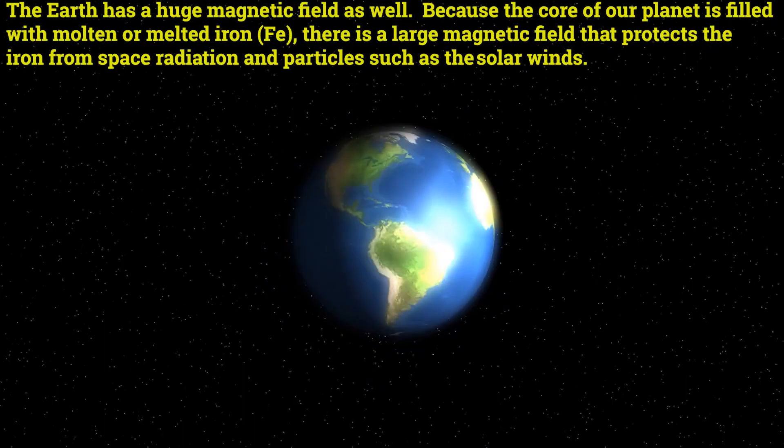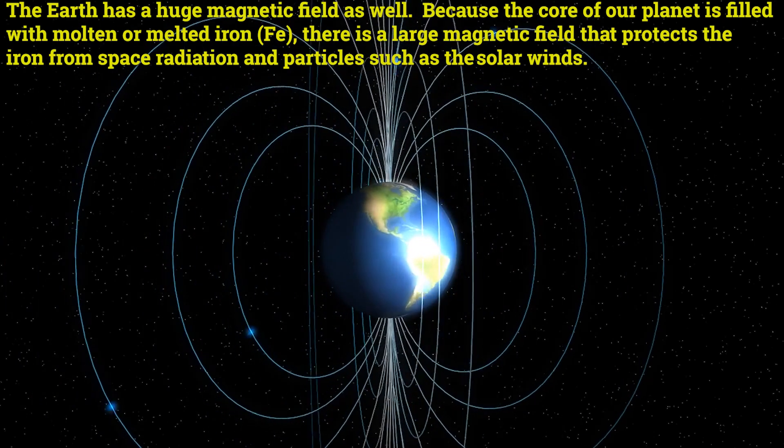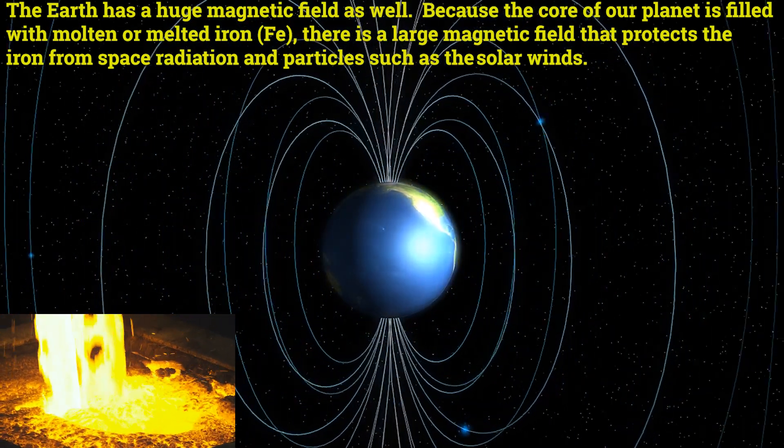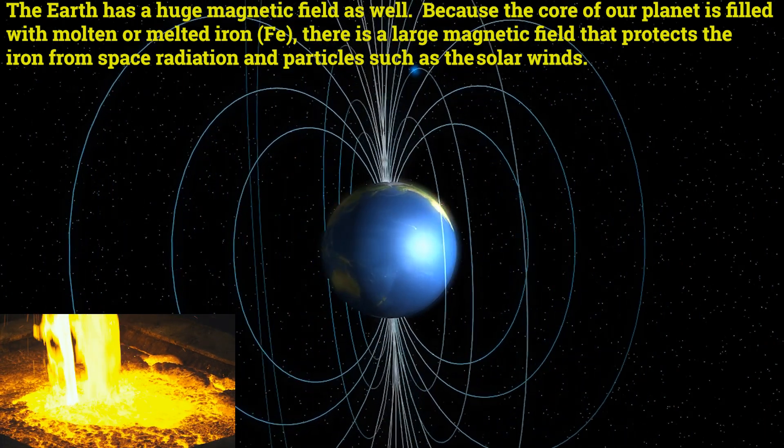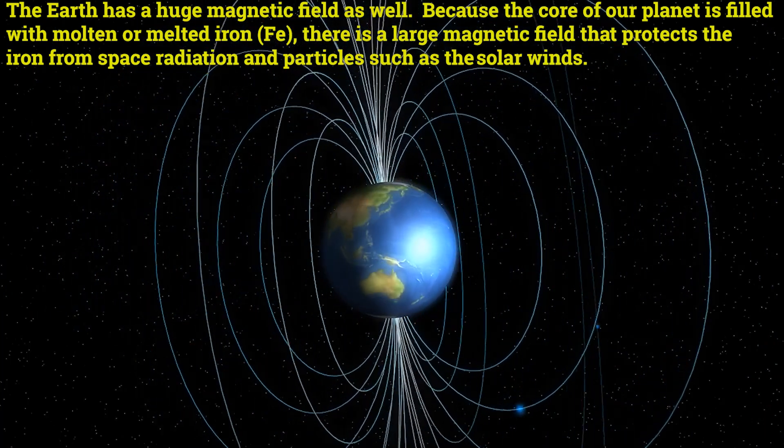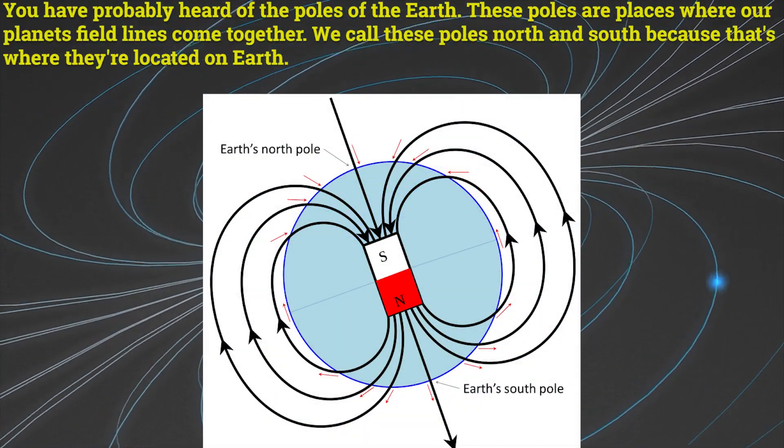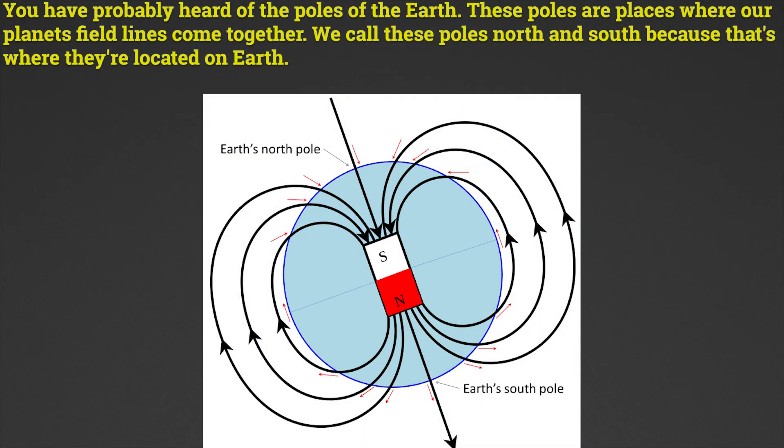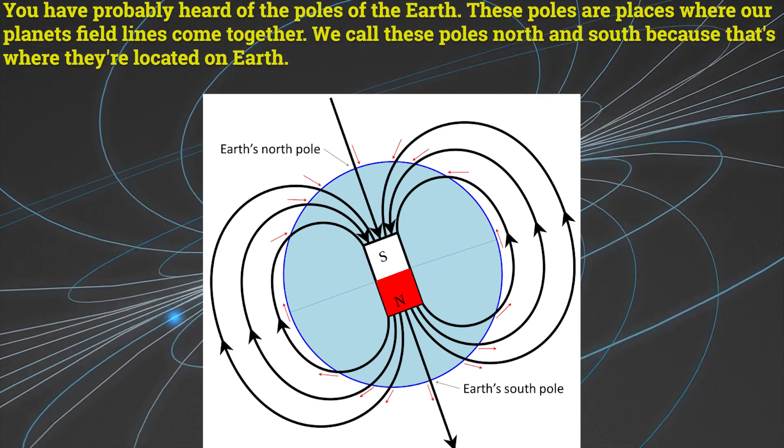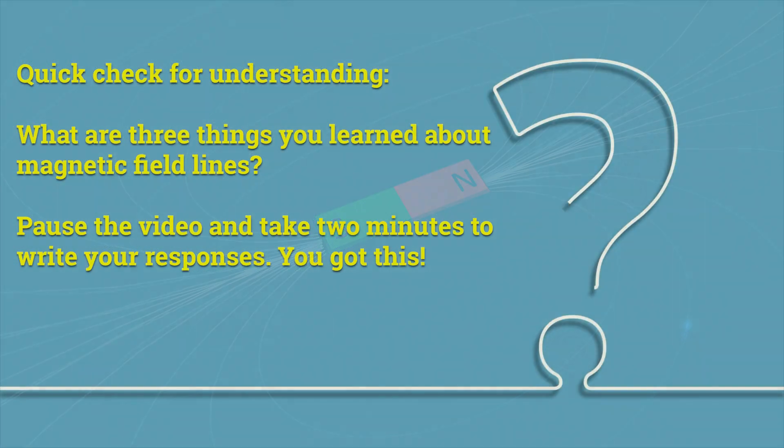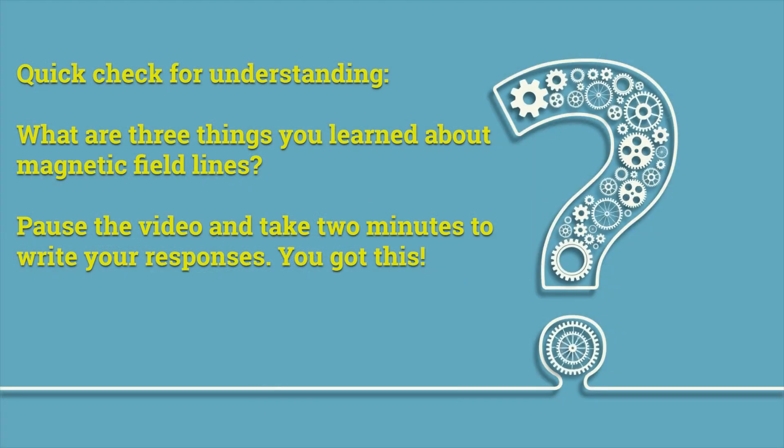The earth has a huge magnetic field as well. Because the core of our planet is filled with molten or melted iron, there is a large magnetic field that protects the earth from space radiation and particles such as the solar winds. You have probably heard of the poles of the earth. These poles are places where our planet's field lines come together. We call these poles north and south because that's where they're located on earth. Quick check for understanding: What are three things you learned about magnetic field lines? Pause the video and take two minutes to write your responses.